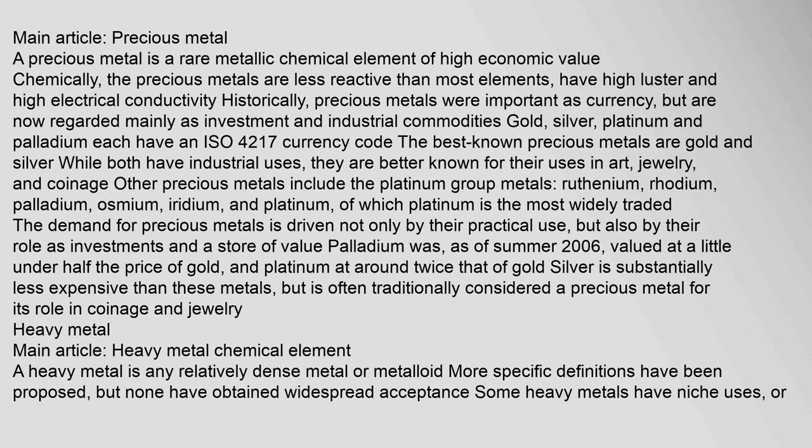A precious metal is a rare metallic chemical element of high economic value. Chemically, precious metals are less reactive than most elements, and have high luster and high electrical conductivity. Historically important as currency, they are now regarded mainly as investment and industrial commodities. Gold, silver, platinum, and palladium each have an ISO 4217 currency code. The best known are gold and silver; both have industrial uses but are better known for art, jewelry, and coinage. Other precious metals include the platinum group metals: ruthenium, rhodium, palladium, osmium, iridium, and platinum, of which platinum is the most widely traded.